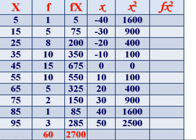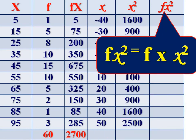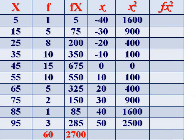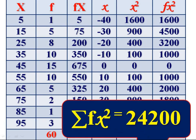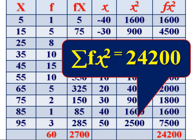Multiply the frequency with the squared deviations. fx square. fx square is f into x square. Multiply each frequency with its corresponding x square. 1 into 1,600 is 1,600. 5 into 900 is 4,500. 8 into 400 is 3,200. And obtain the summation of fx square. Sigma fx square is equal to 24,200.